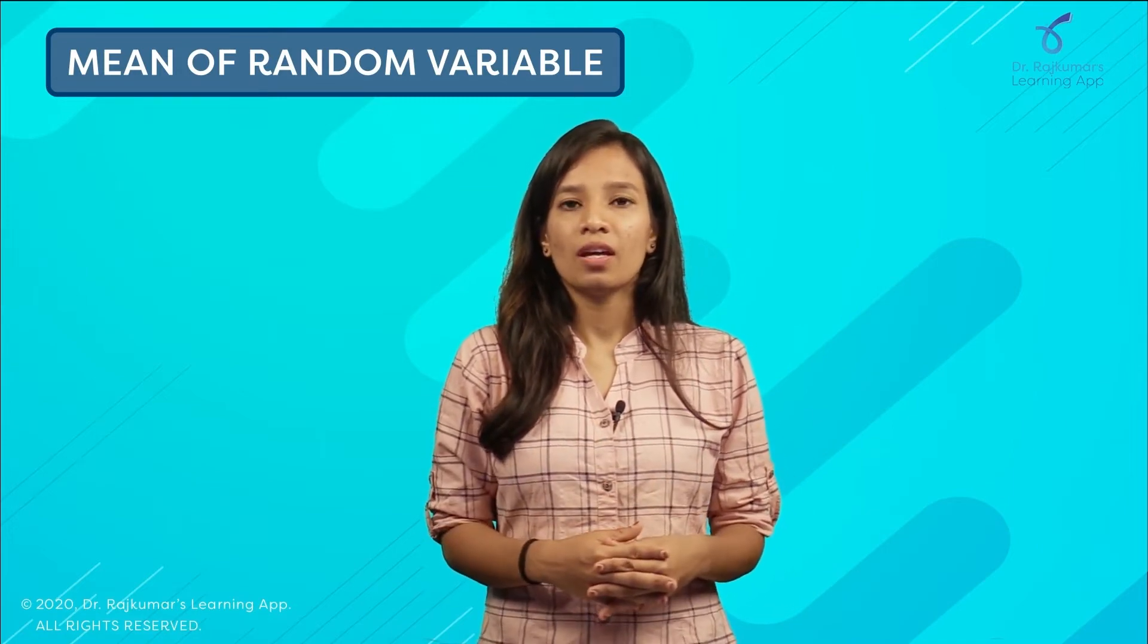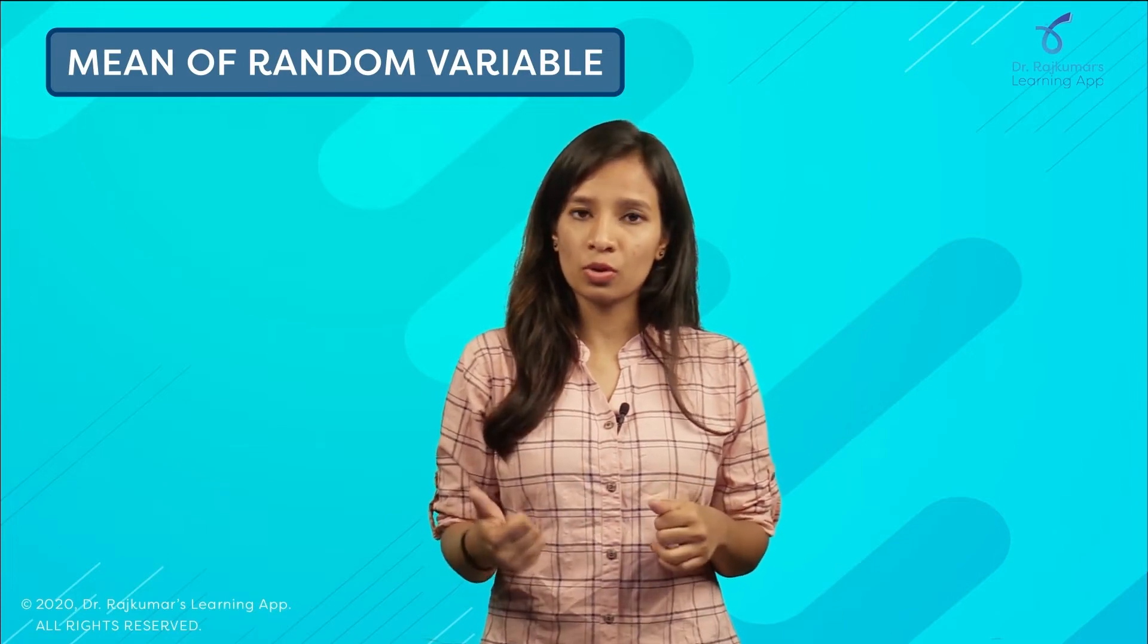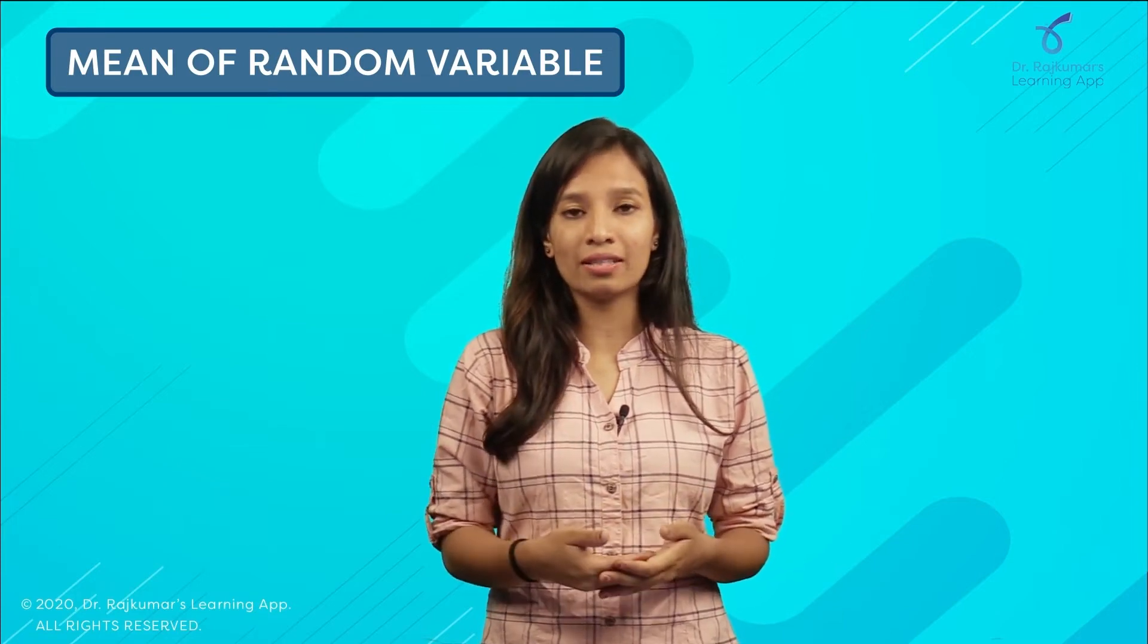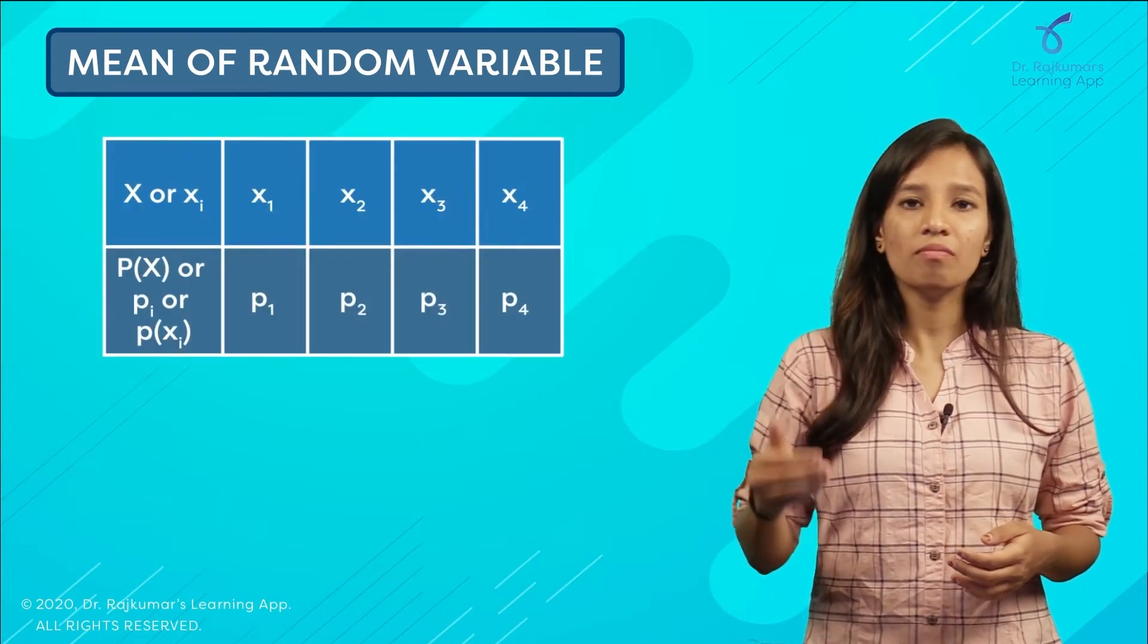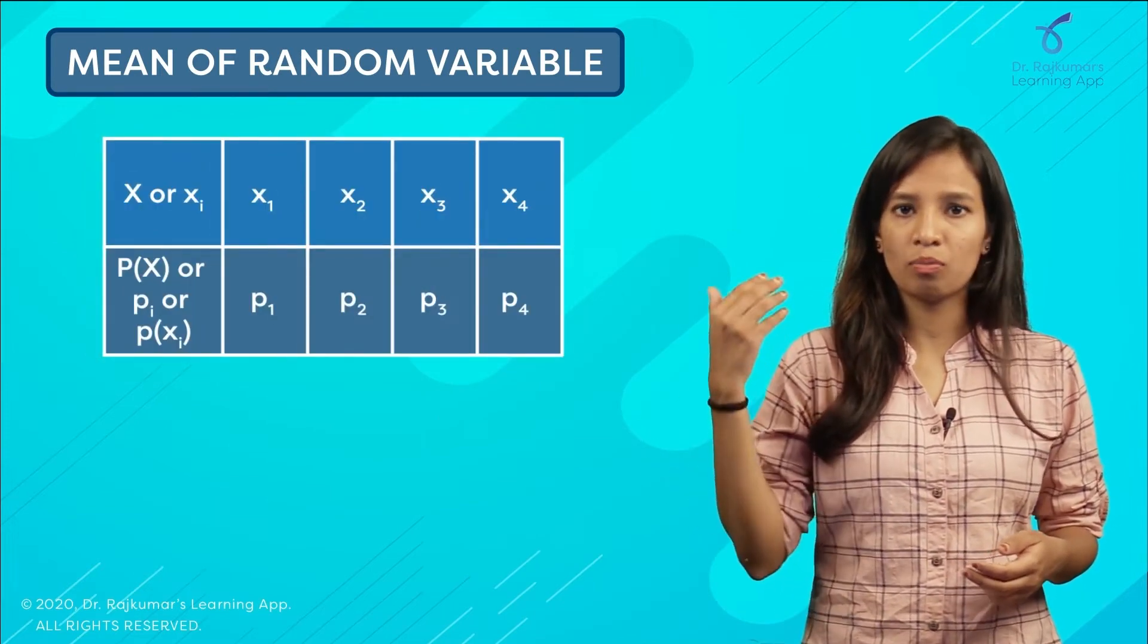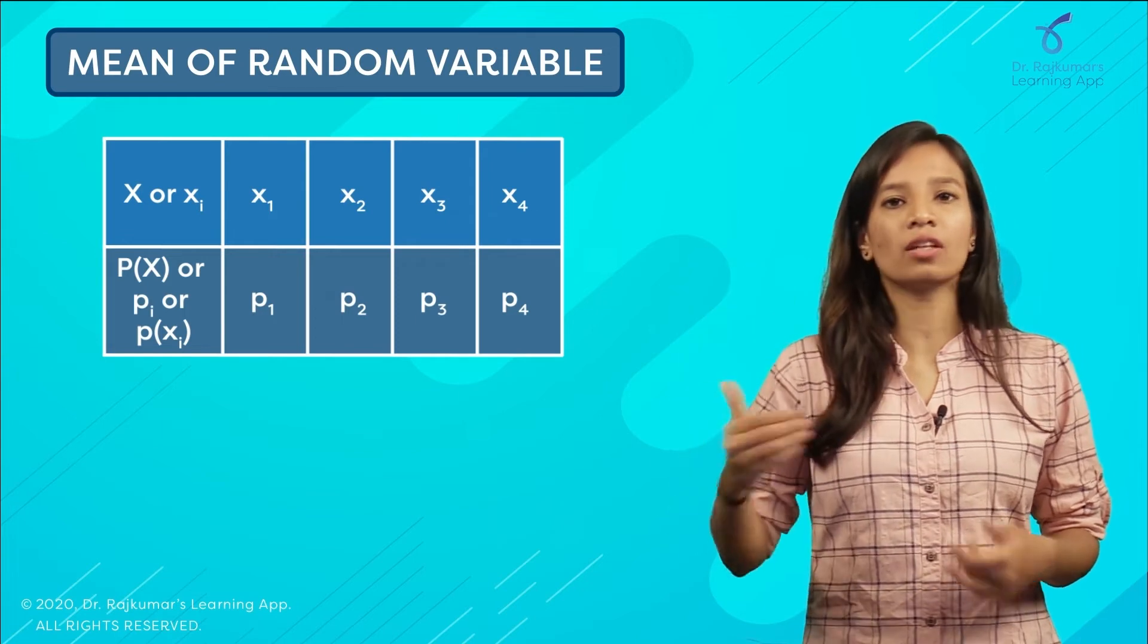If you look at our probability distribution chart that we have already discussed previously, we have our x in one place and then p of x, the probability of this x, in another column. This is our distribution.